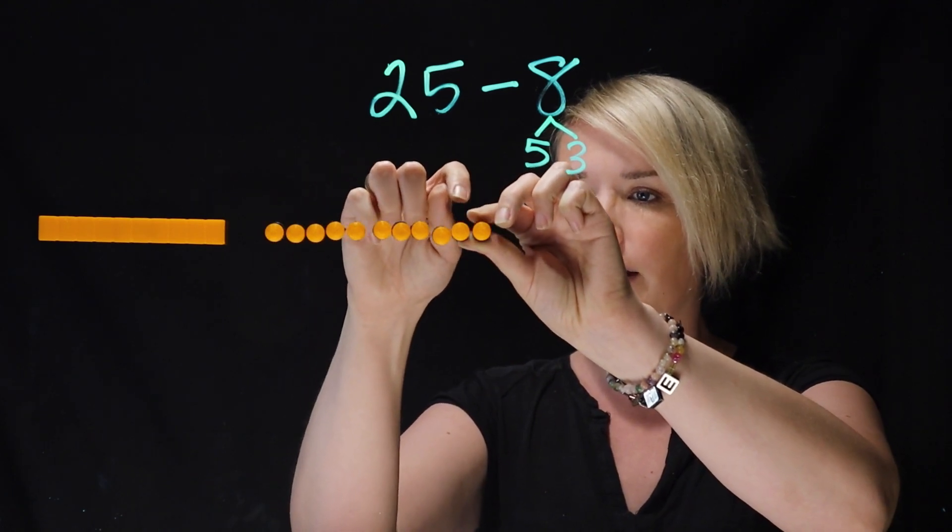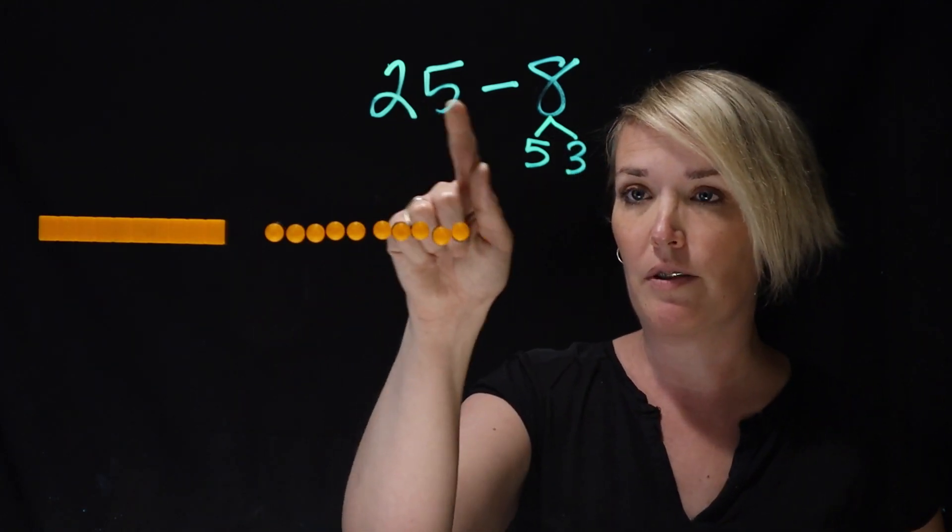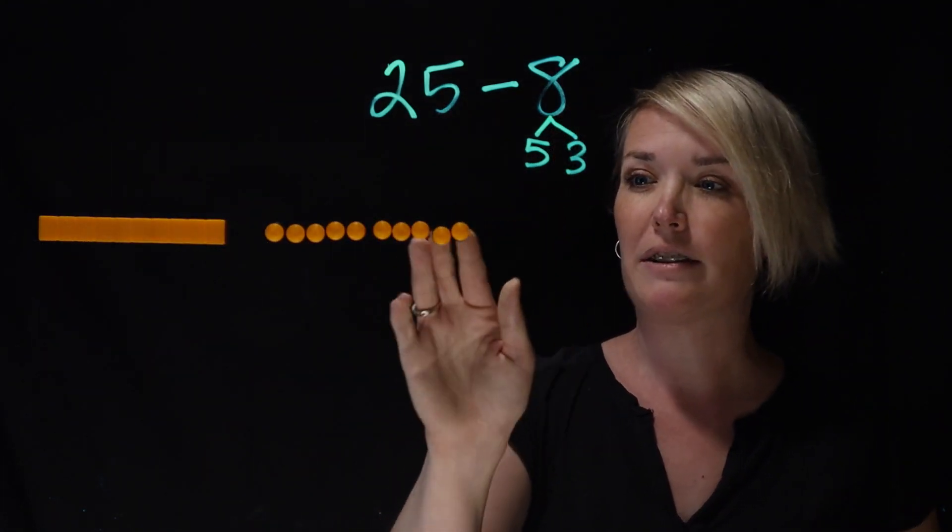5, 6, 7, 8, 9, 10. Okay, so there's still 20 here. So she went 25 minus 5 to give her 20, and then minus the 3.